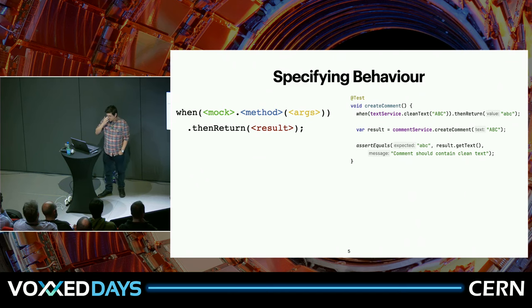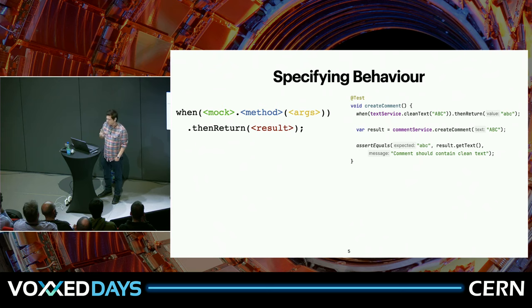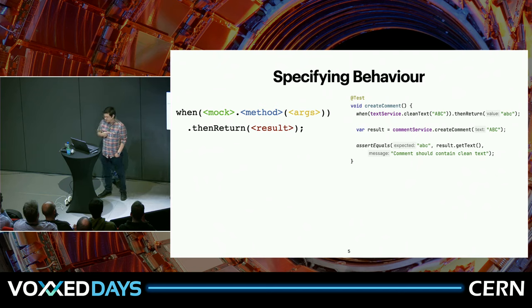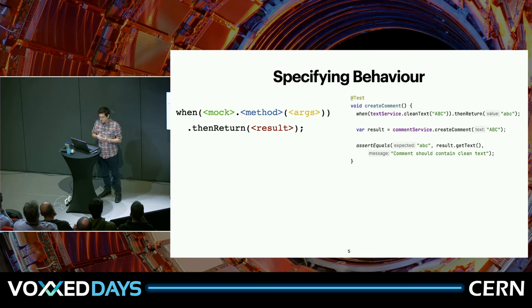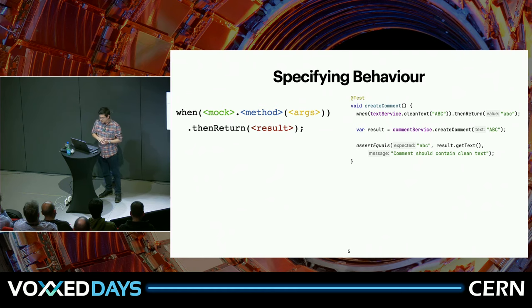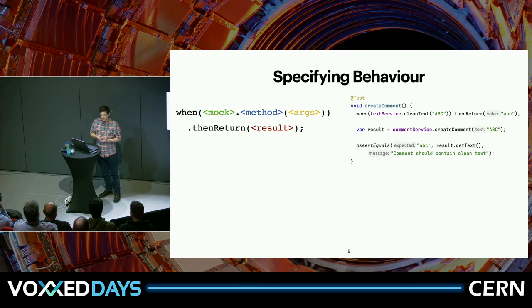The whole reason we want to use mocks is to be able to specify the behavior that we want to test. To do that, we need to stub our mocks. Mockito gives us two ways of doing this. The first and preferred method is the thenReturn family of methods — there's thenReturn, thenThrow, and thenAnswer, which I won't get into in this talk. The basics are: we have when(), and inside the when method we have the mock and we call the method on the mock with the arguments that we expect. Then we say thenReturn the result that we want for our test.